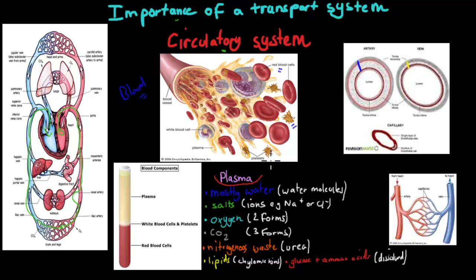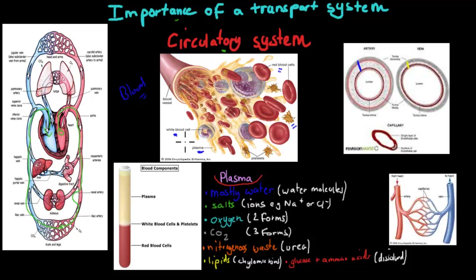We've got platelets as well — these are cells which are needed to stop bleeding, for clotting, so people who have platelet deficiencies will be given platelets. And we've got plasma as well, which is the watery component, important for people who have coagulation deficiency problems. And also we have white blood cells, given to patients who do chemotherapy to treat cancer because those people have weakened immune systems, so we give them extra white blood cells to make sure their immune system becomes stronger.